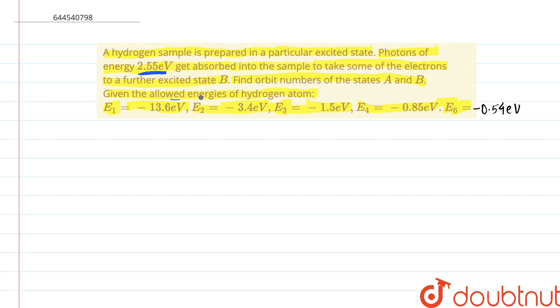So we can clearly see from these given allowed energies the difference between minus 0.85 electron volts minus minus 3.4 electron volts is giving us 2.55 electron volts.